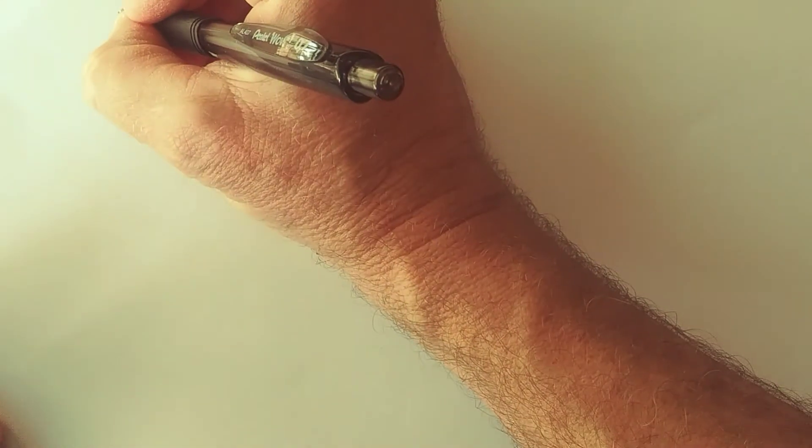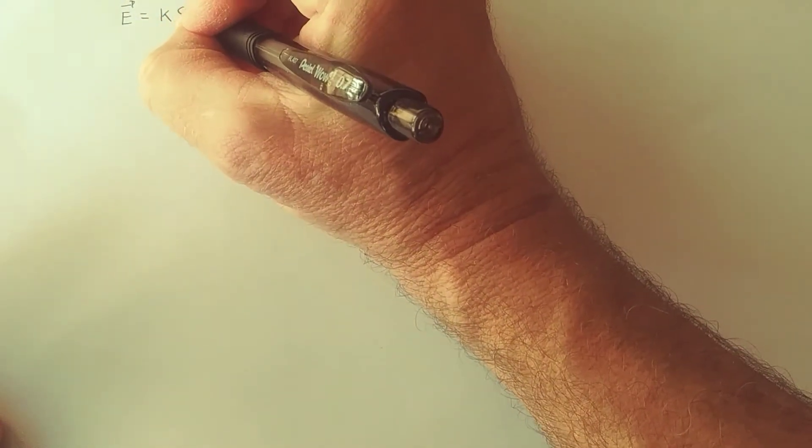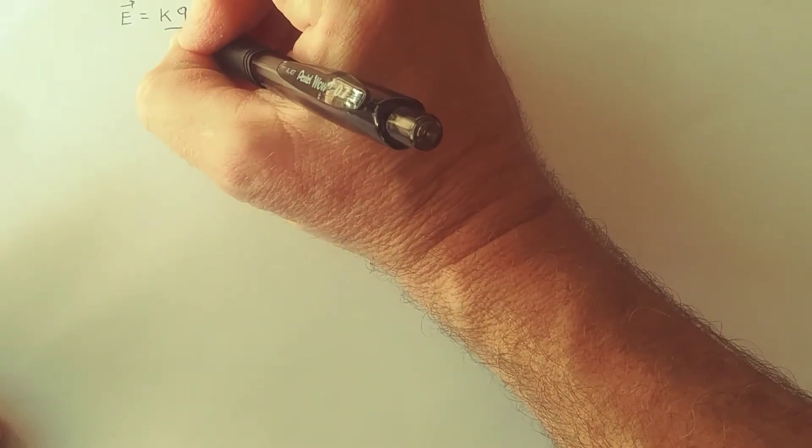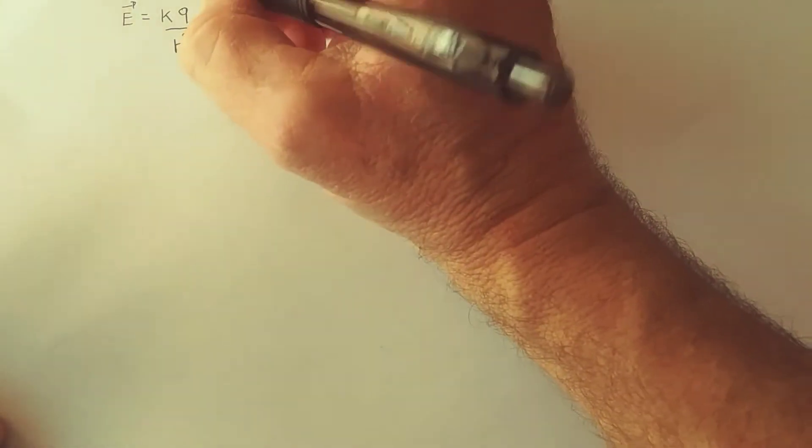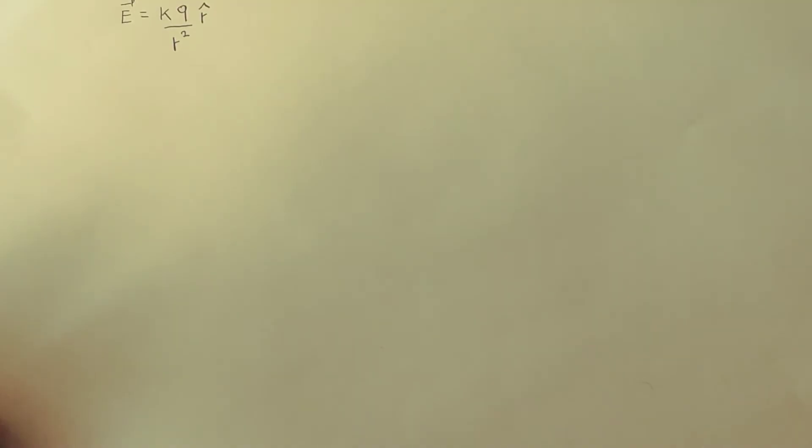Last time we wrote the electric field as some constant times the charge divided by the distance squared. That's the magnitude part of the electric field, and then there's a unit vector that captures the concept of direction.